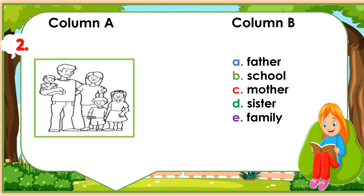Number 2: Look at this picture. What's this? Match this picture with a correct word in column B. A. Father. B. School. C. Mother. D. Sister. E. Family. Write the letter only.